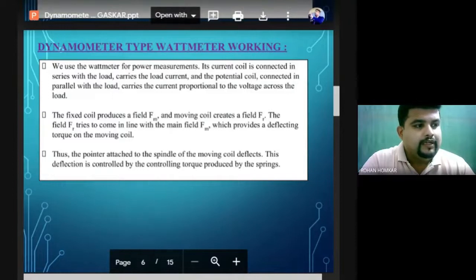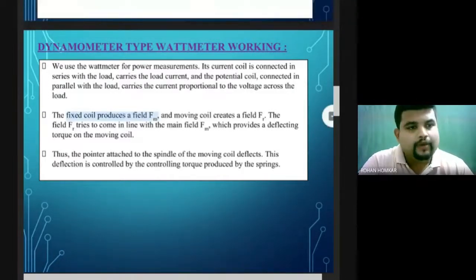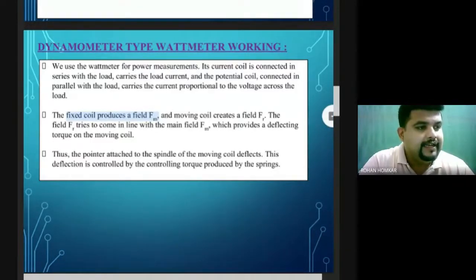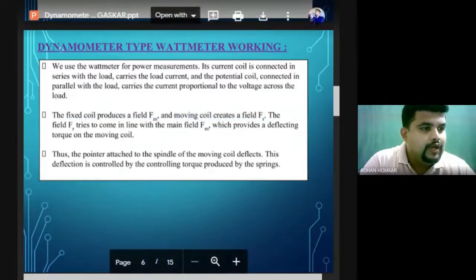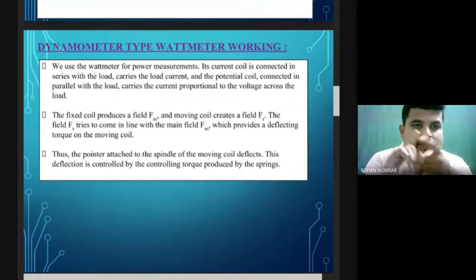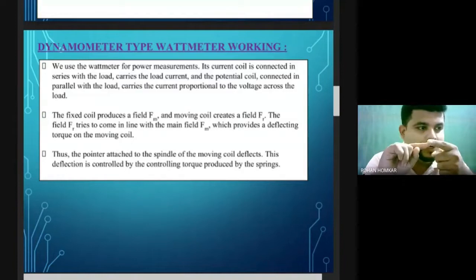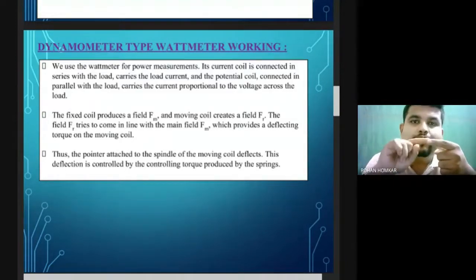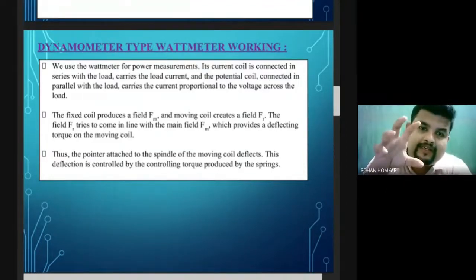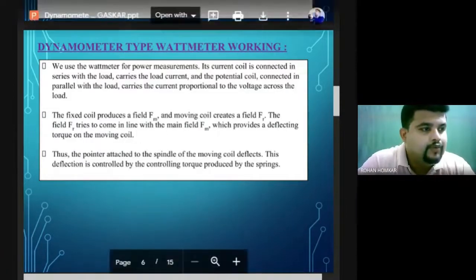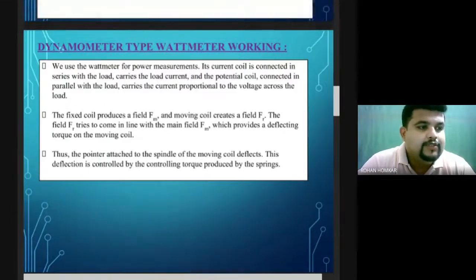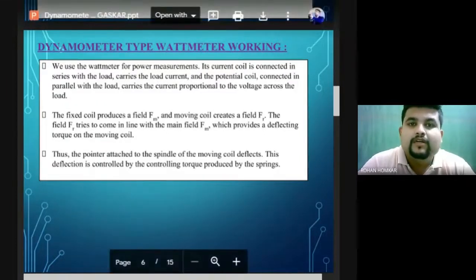If the fixed coil produces a magnetic field, and the moving coil also creates its own magnetic field, then both magnetic fields interact with each other to create a deflecting torque. The spindle connected to the moving coil along with the springs provides the control torque — the spring brings the pointer back to the zero position.